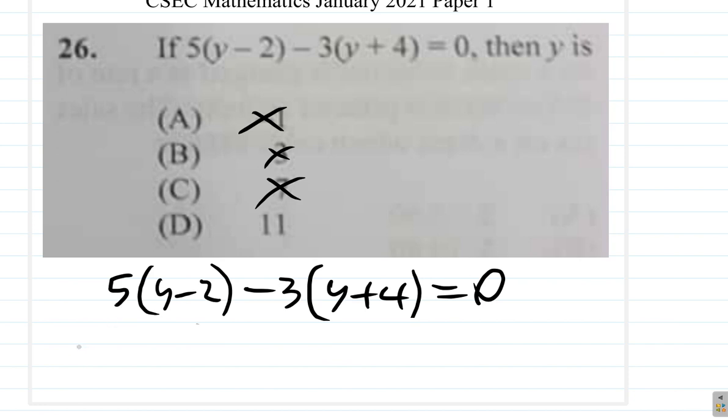So, suppose we had tried 11 first. If only we had tried 11 first, that would be nice. But, anyway, let's try 5, 11 minus 2, minus 3 times 11 plus 4 would give us 5 by 11 minus 2 is 9.